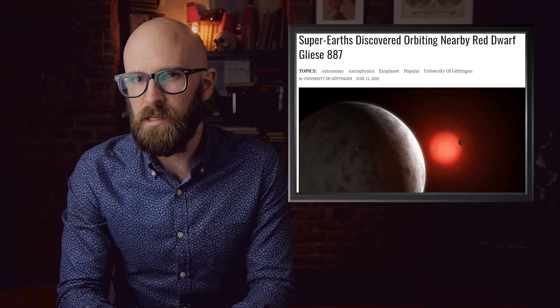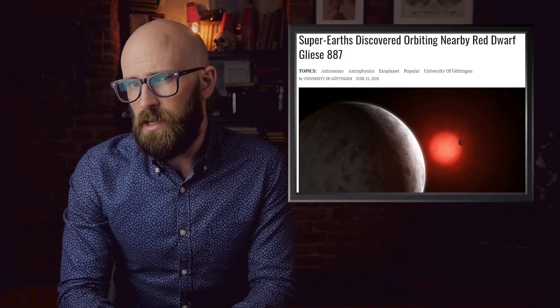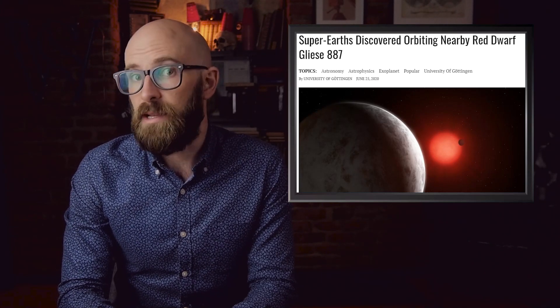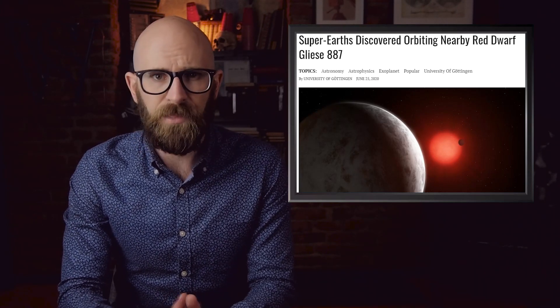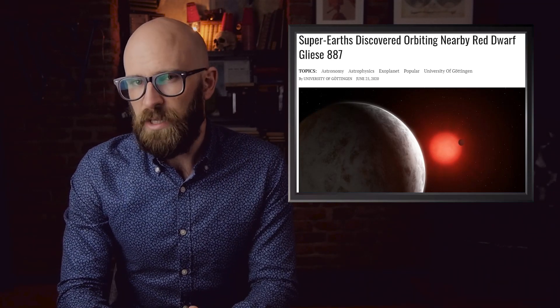In fact, we recently discovered a system of multiple super-Earths orbiting red dwarf GJ887. Stars like our own only make up about 10% of those observed in our galaxy. The absence of a red dwarf twin or red dwarf in general makes our solar system just a little bit stranger.